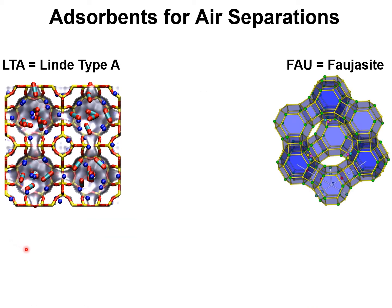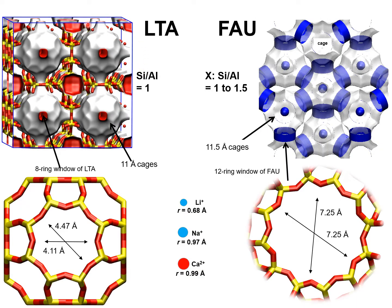Cation exchange zeolites such as LTA and Faujasite are commonly used adsorbents in PSA technologies for air separation. LTA zeolites consist of cages of diameter approximately 11 angstroms, and adjacent cages are separated by windows that have dimensions of approximately 4 to 4.5 angstroms.